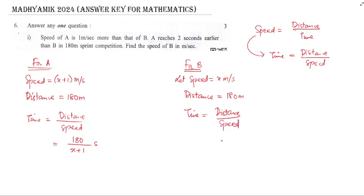Similarly for B, the time is given by distance divided by speed. The distance is the same — 180 meters — and this time the speed is x. So the time for B is 180 divided by x.